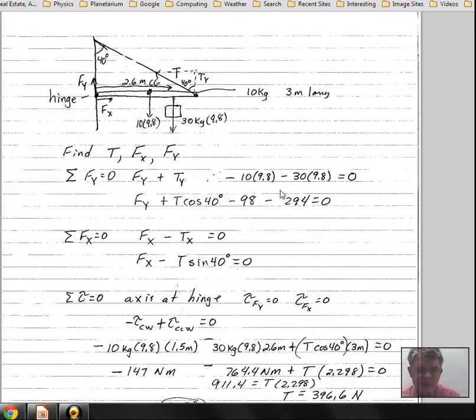So here's what the Y equation looks like. There are two unknowns: the force component in the Y direction, and that's at the hinge, and then the tension in the cable.